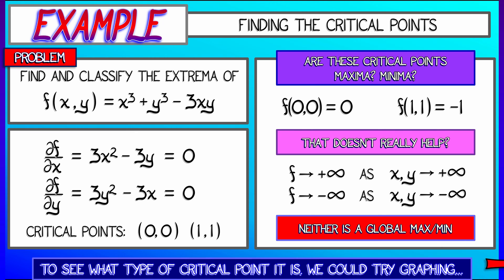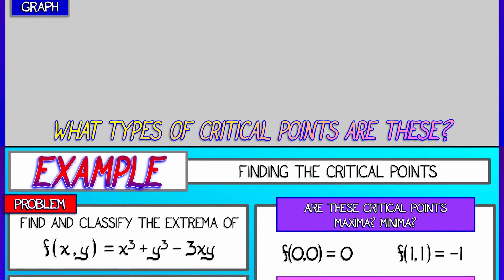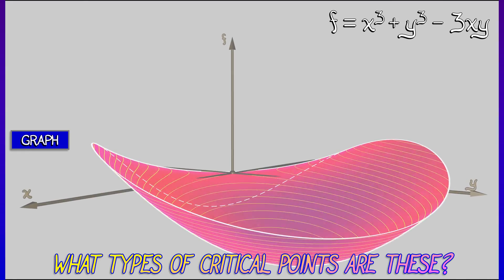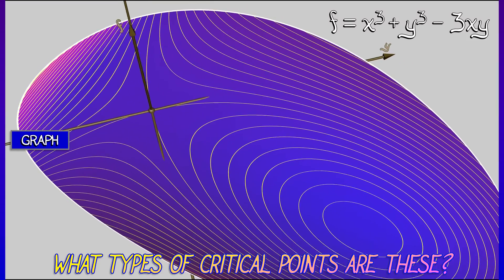So what do we do? Well, we could try graphing the function. This is a function with just two inputs. That's not so bad. So we could draw a picture and take a look at what we get. But it's pretty clear that we have these two critical points.